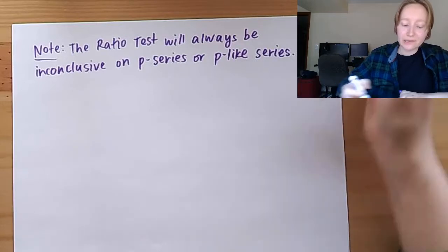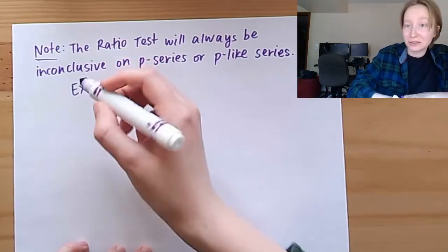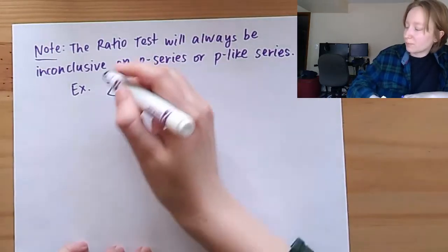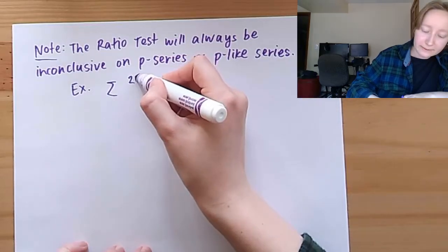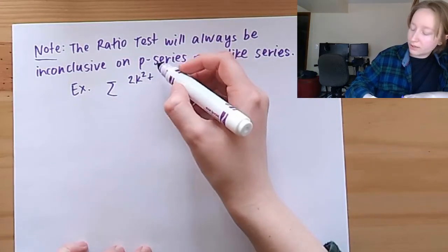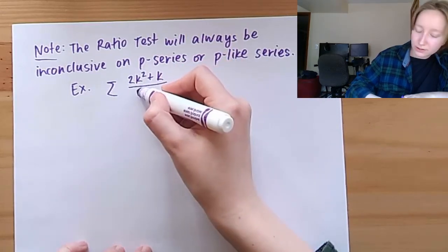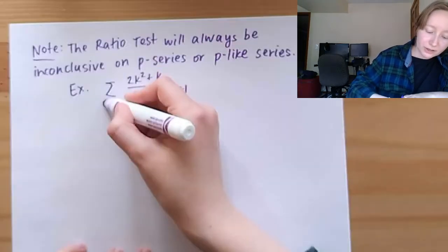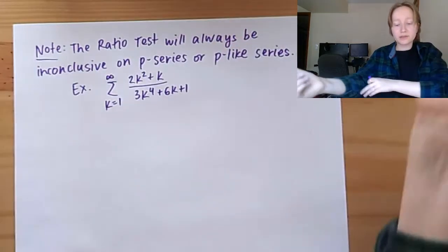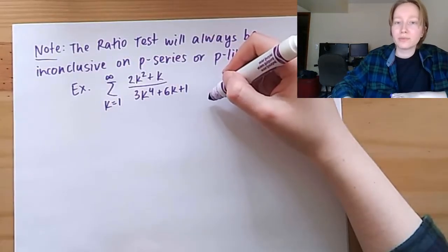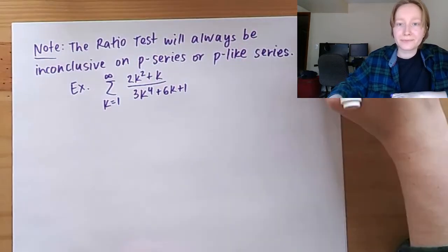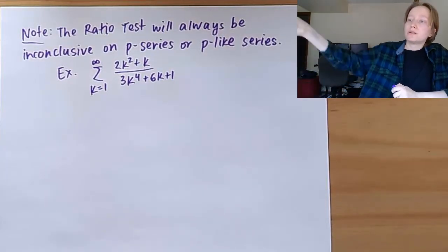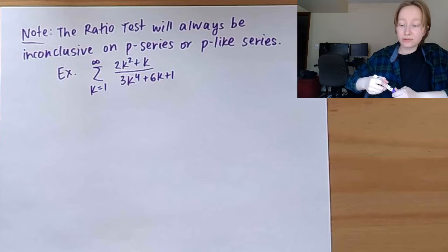As an exercise you can try on your own: consider the series with general term (2k² + k)/(3k⁴ + 6k + 1) summed from k=1 to infinity. This is a p-like series because there are polynomials in both the numerator and denominator in terms of the index k, and the ratio test will be inconclusive on it.